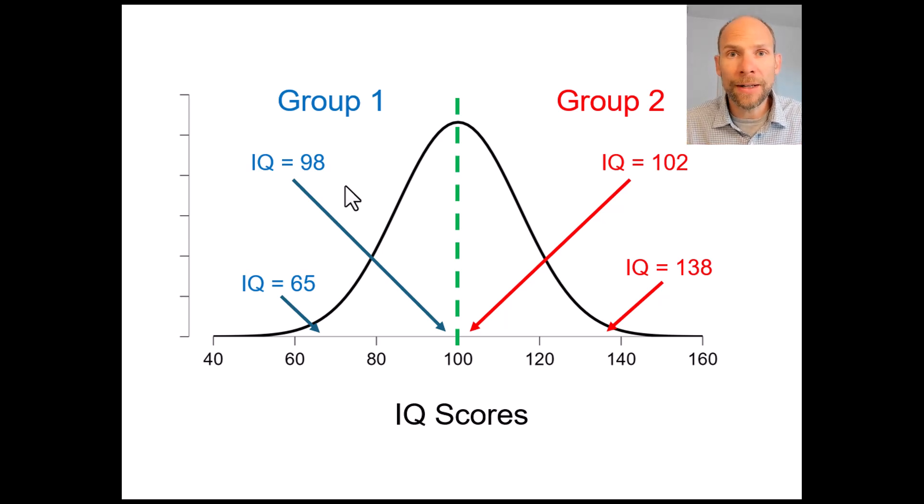or you could run a linear regression analysis where the IQ scores are the independent or predictor variable and the job success scores are the dependent variable that you predict from IQ scores and that's closely related to a Pearson product moment correlation analysis